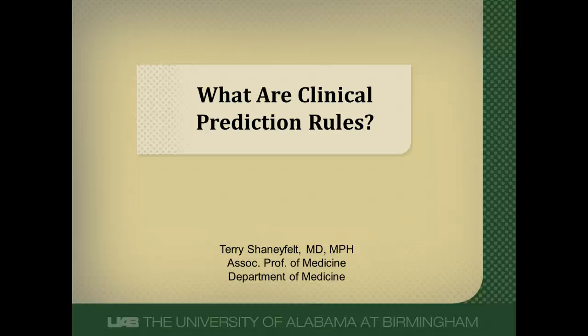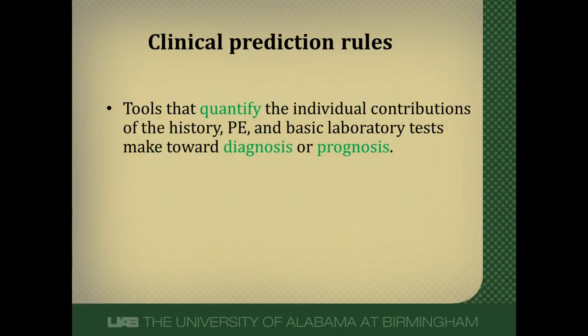This video gives a brief overview of what clinical prediction rules are. Studies have shown that doctors aren't very accurate at guessing the probabilities of disease, and we do even worse at guessing the prognosis of a given disease. For example, think about somebody with cirrhosis — how accurate could you be if they asked how long they were going to live? Clinical prediction rules help us become more accurate at estimating diagnostic and prognostic probabilities.